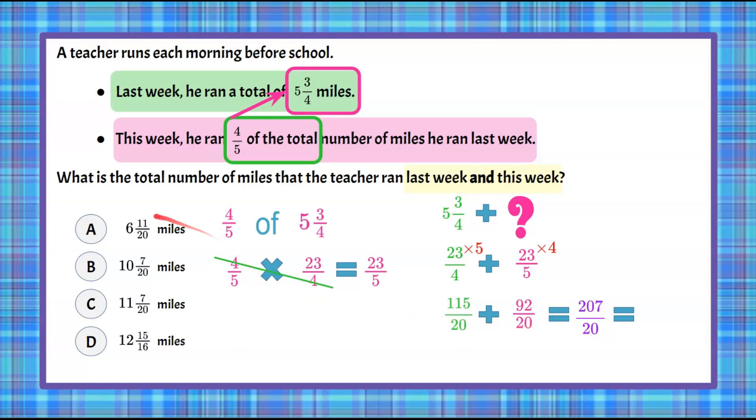Now we can see our answer choices are all in mixed numbers. 20 goes into 200 10 times with 7 left over. So 207/20 is the same value as 10 and 7/20. So we know that combined both weeks, he ran 10 and 7/20 miles, which is answer choice B.